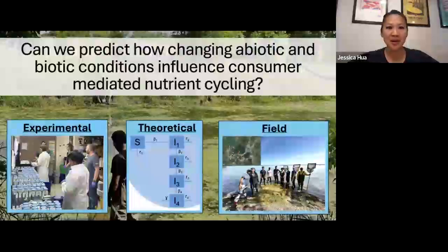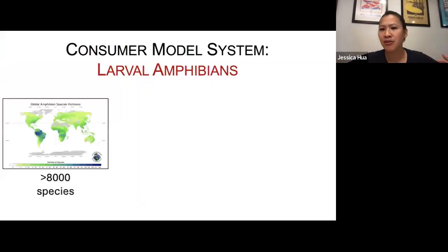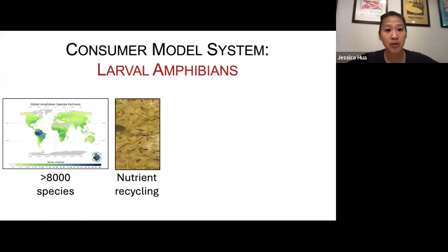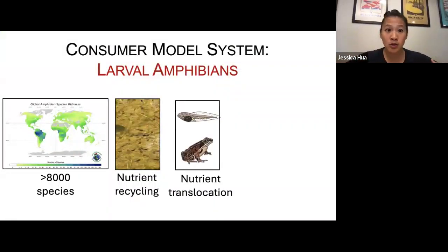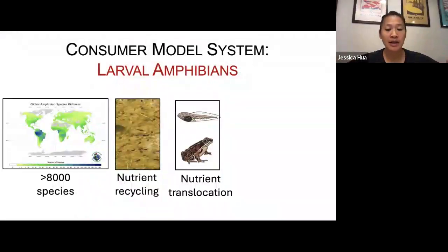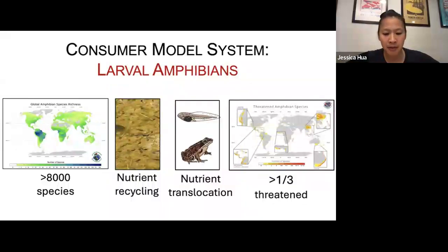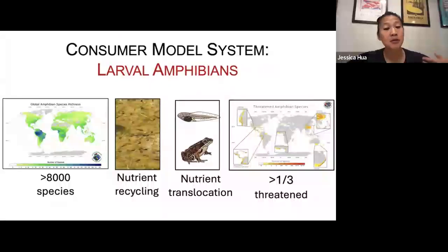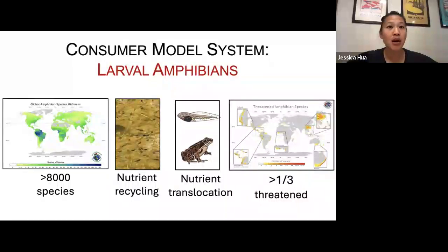To address this broad question, I'll tell you about some work with larval amphibians. Larval amphibians are really interesting — there are over 8,000 species worldwide. They play an important role in moving nutrients from one location to the next, making up a large biomass of pond ecosystems. By eating and excreting, they move nutrients within an ecosystem. Because amphibians metamorphose and use multiple habitats, they can also move nutrients from aquatic to terrestrial ecosystems. Importantly, amphibians are currently the number one most threatened vertebrate taxa, giving this work broad conservation implications.